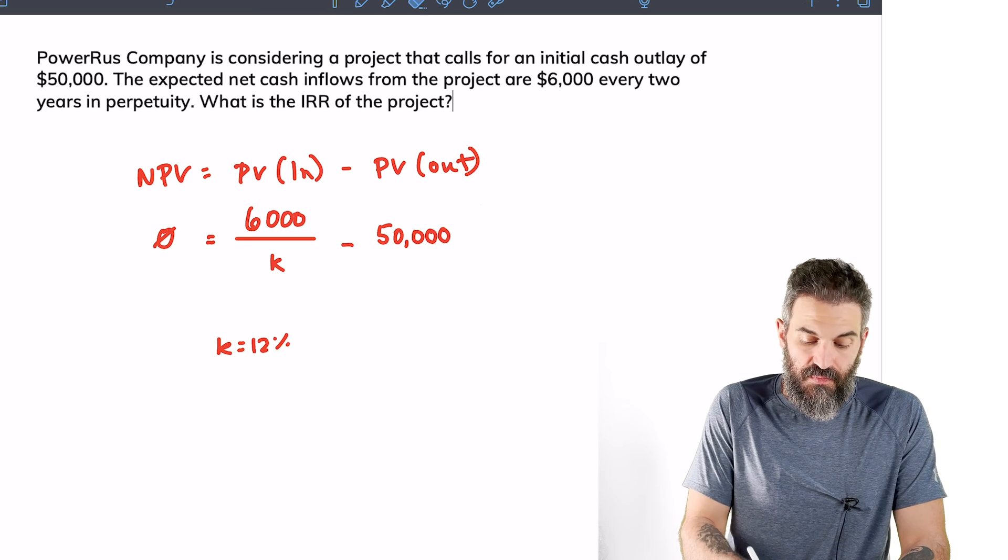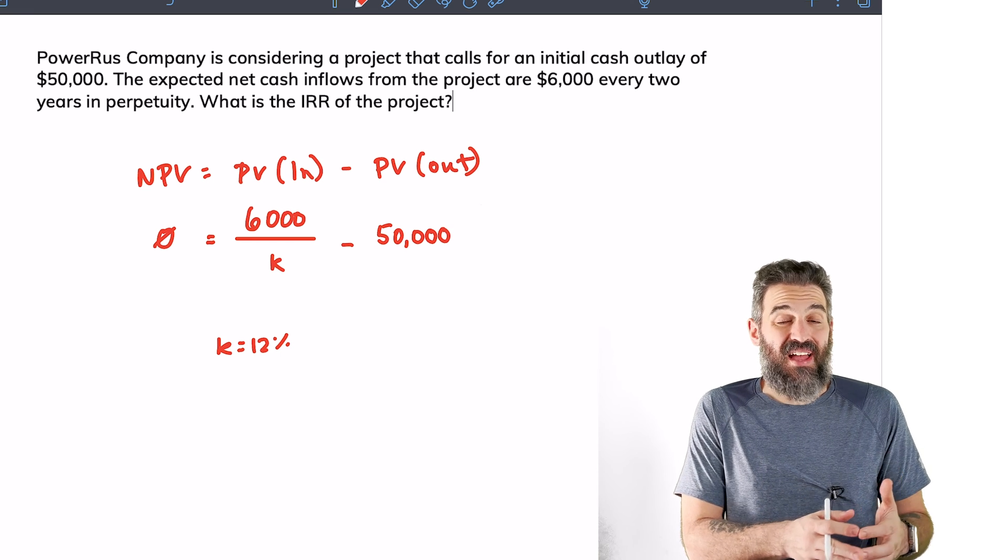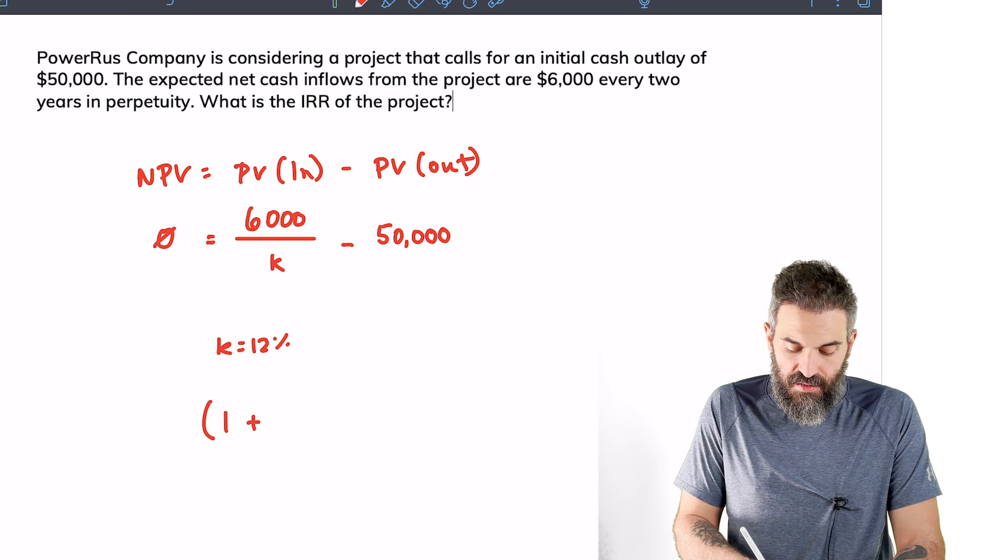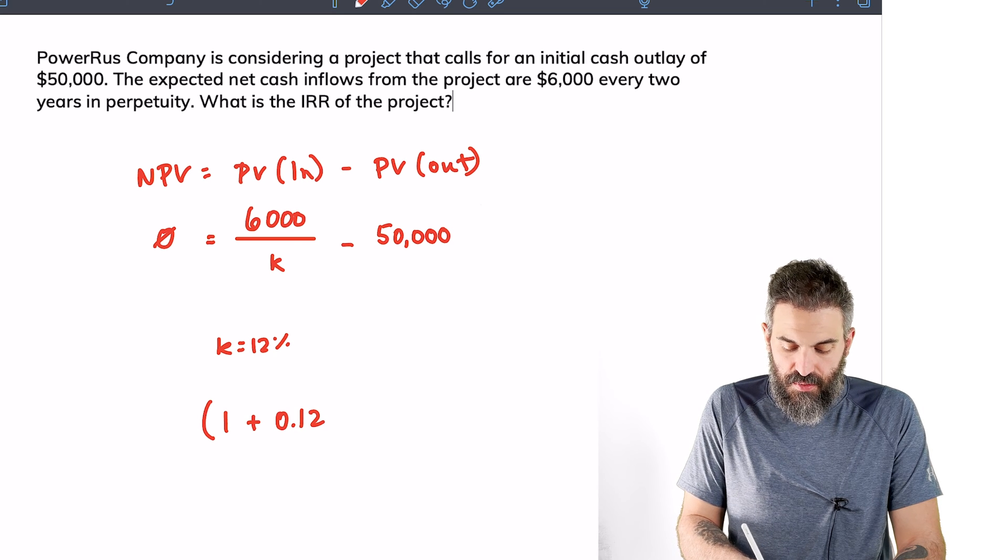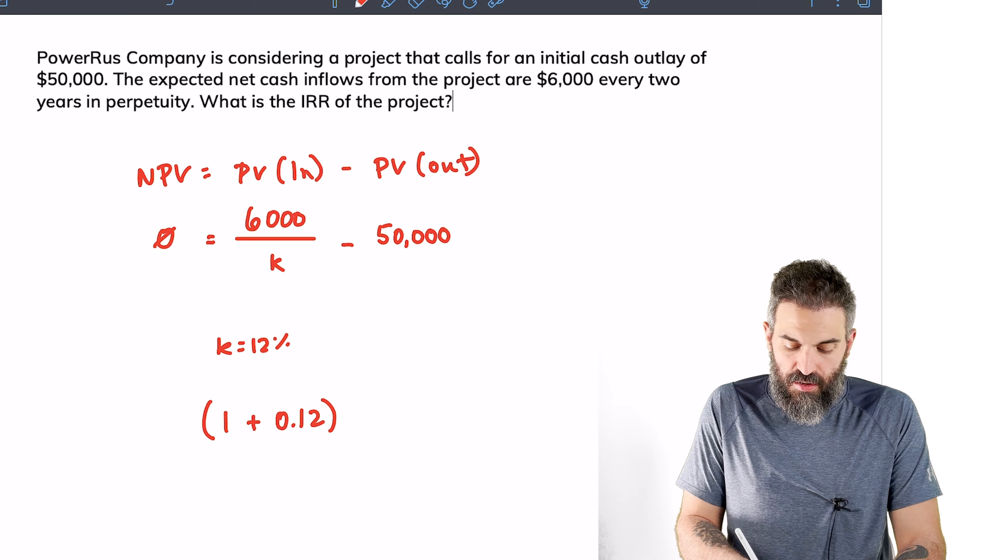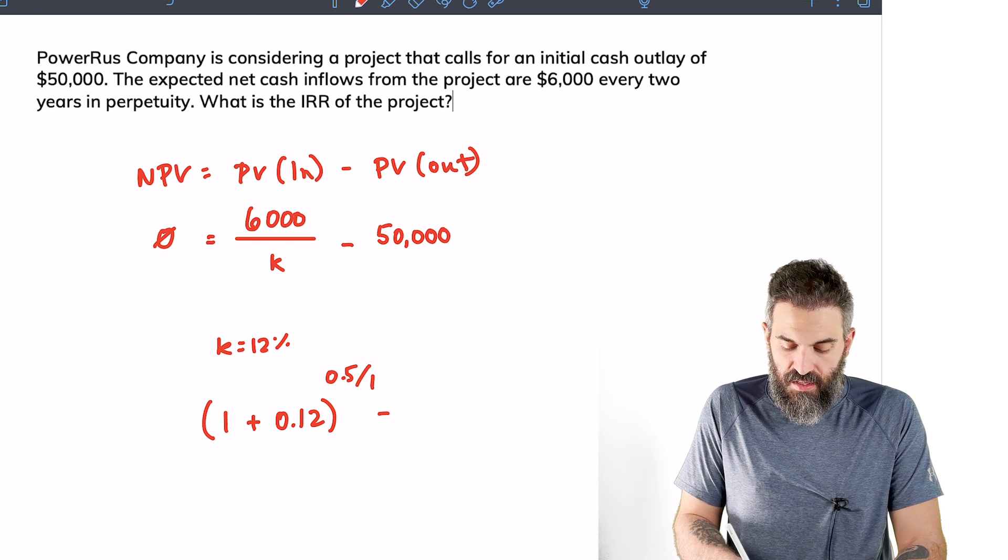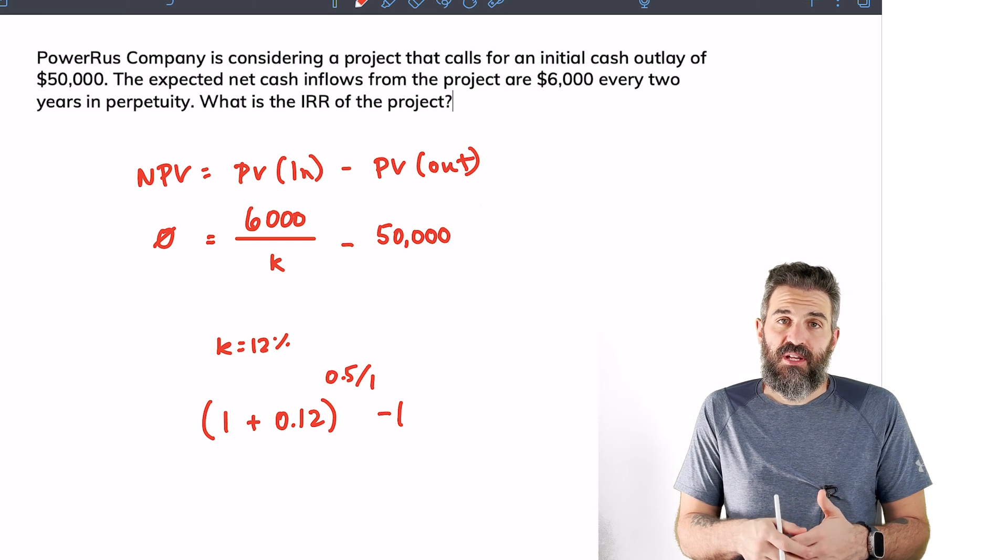So now we want to convert this to an effective annual rate. We take 1 plus 12%, that's our two-year rate, and put that to the power 0.5 over 1, minus 1. We use 0.5 because we have a two-year rate, so it has a frequency of half, over 1 because we want a frequency of 1.